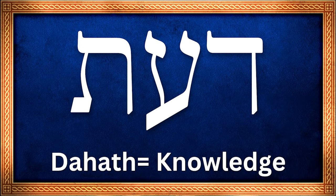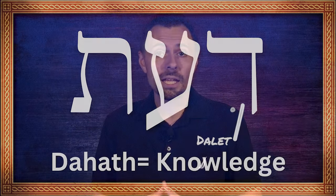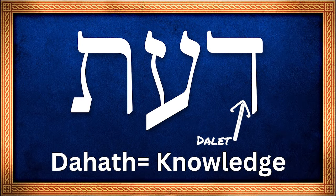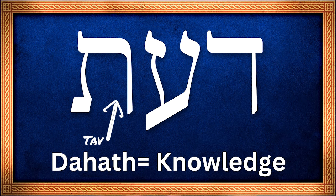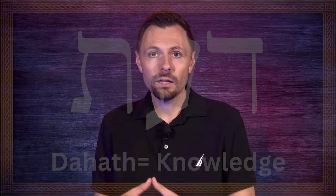I want you to underline that word knowledge there in the Bible. That word is the word deoth in Hebrew. To give you a quick synopsis of the word deoth, it means cunningness, to have a deep-rooted understanding. It actually begins with the letter dalet and then it ends with the letter tav. Dalet is a door; tav is the fullness — it's the last letter of the Hebrew alphabet. So it's as if you're walking in through the door to understand the fullness of something.